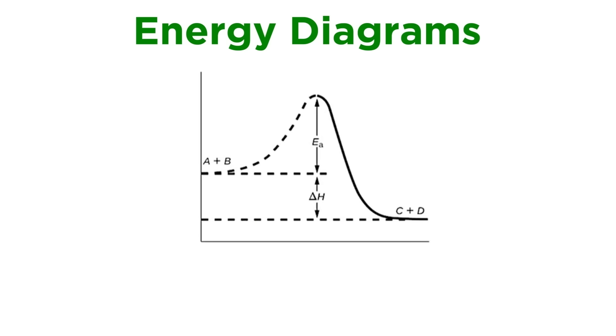These concepts are best illustrated altogether on an energy diagram. On these, the vertical axis represents potential energy. Sometimes this will be in the form of enthalpy, but we can also depict Gibbs free energy.